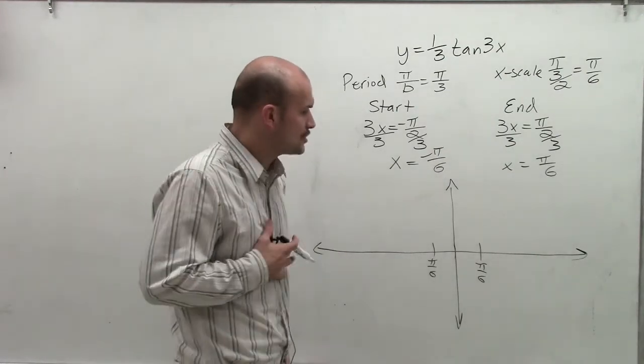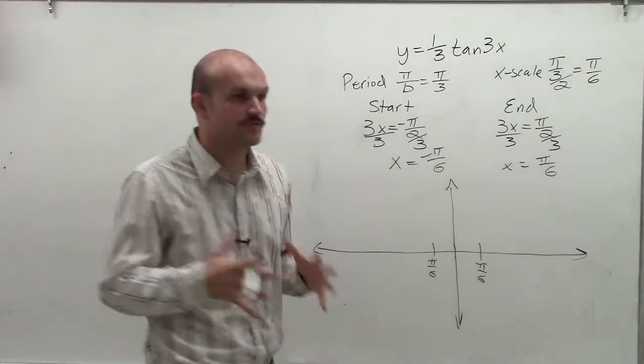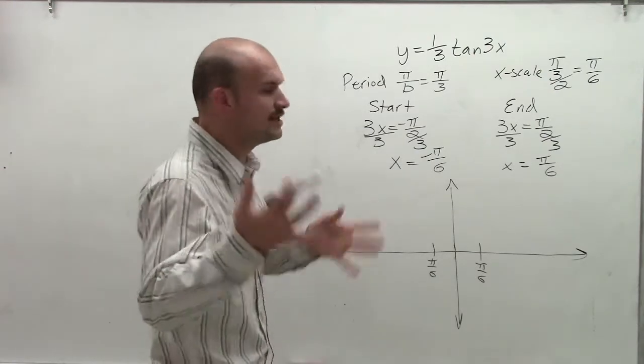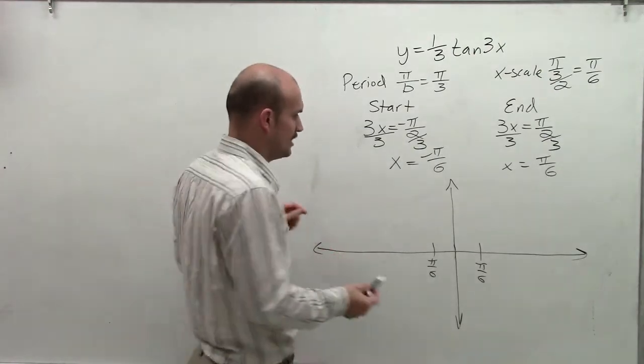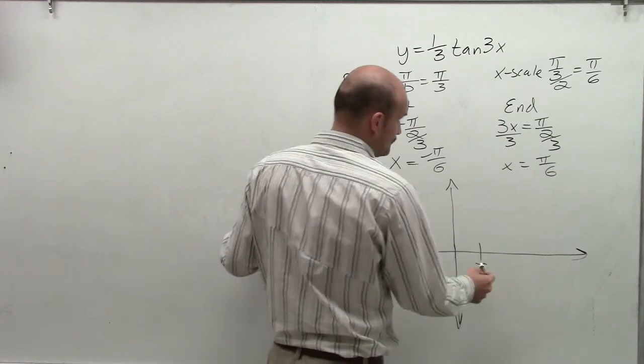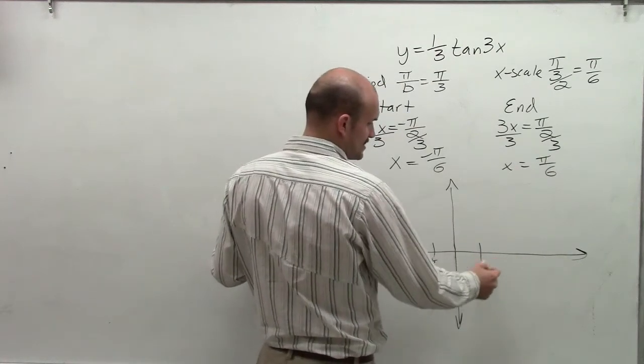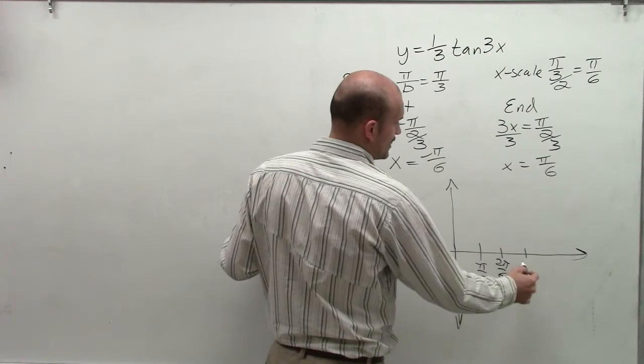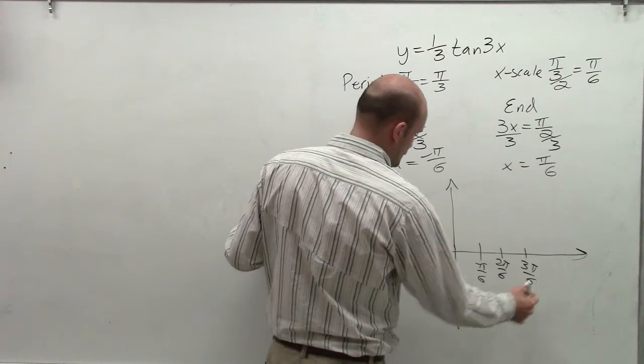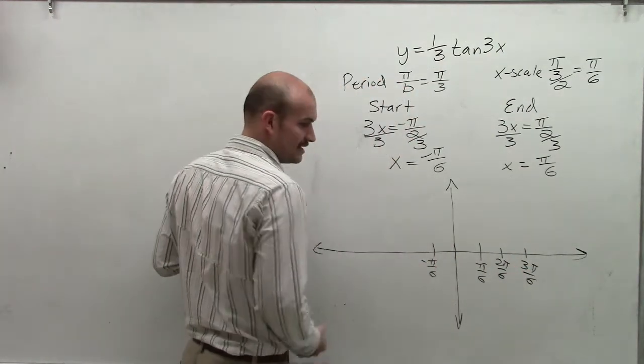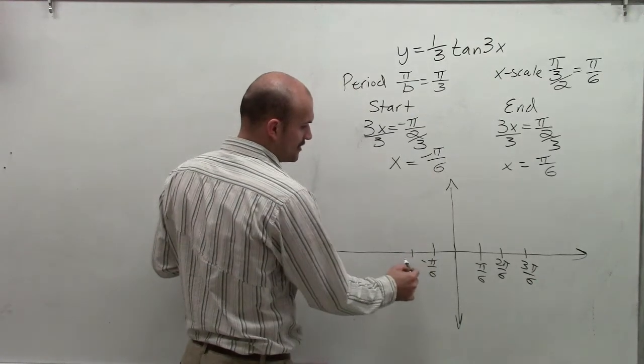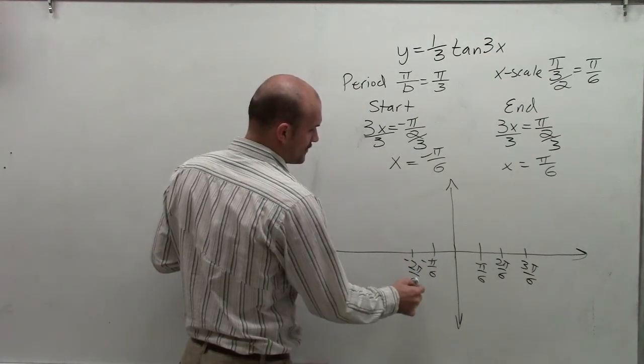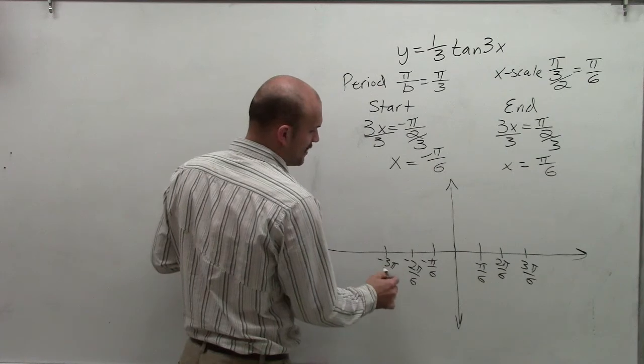So now I just need to determine at each one of these critical points what my graph is going to look like. Let's go in and do at least two more. Let's do a period to the right and a period to the left. So let's just add another pi over 6. If I add pi over 6, this will be 2 pi over 6, and here I'll have 3 pi over 6. Going in the negative direction, I'll have my next point at negative 2 pi over 6, and then negative 3 pi over 6.